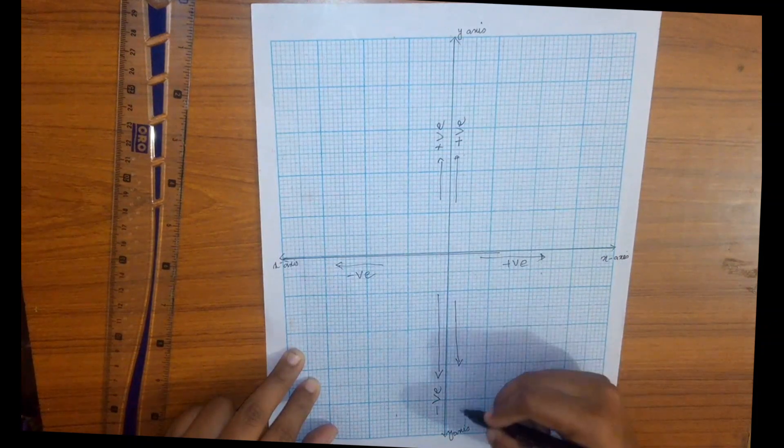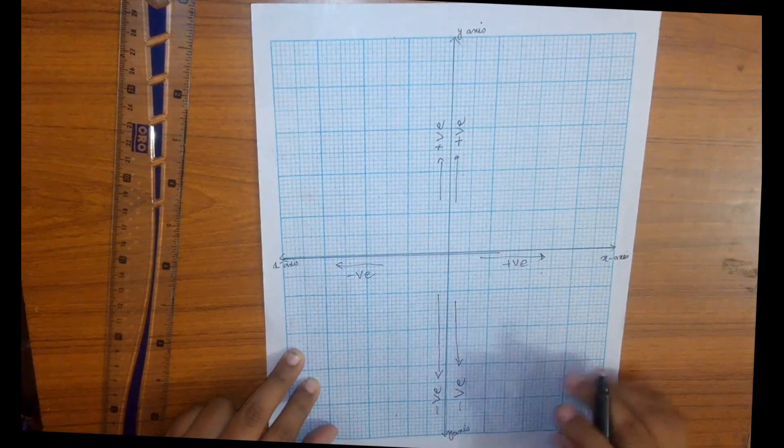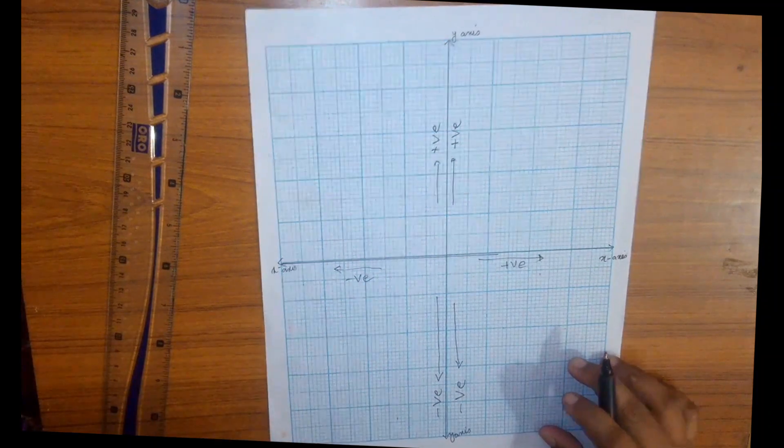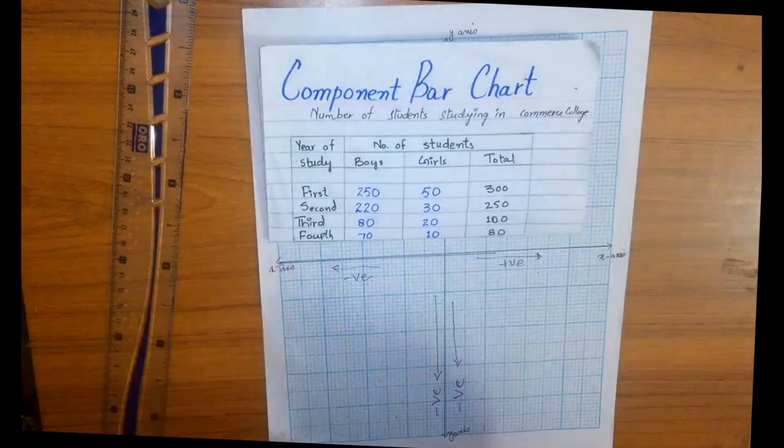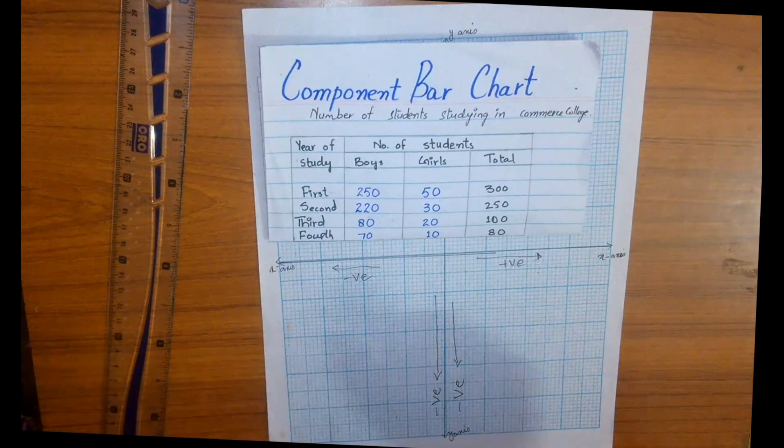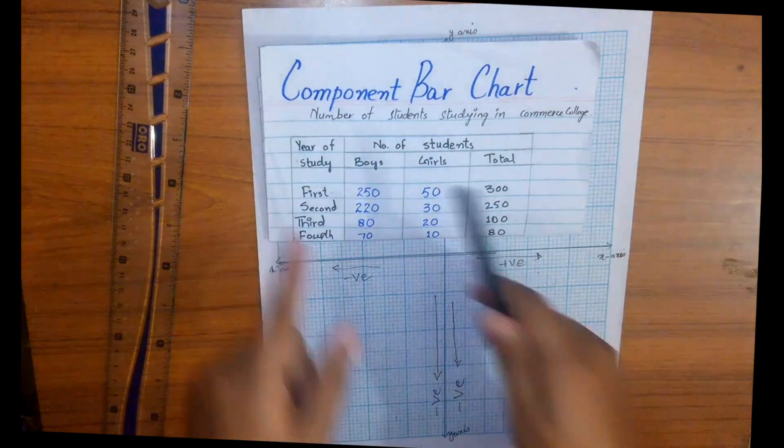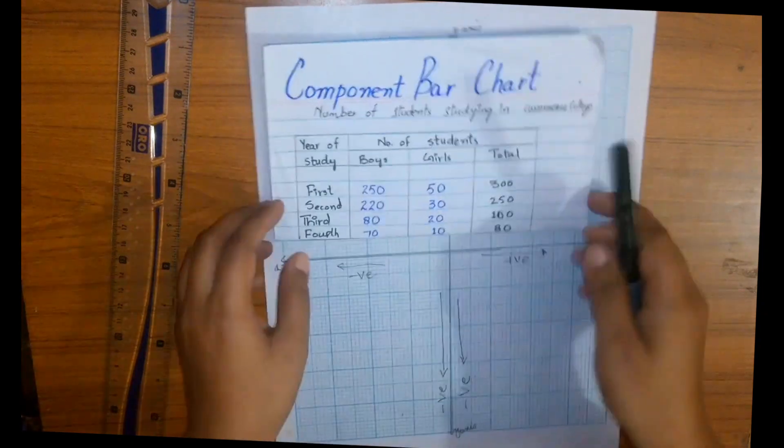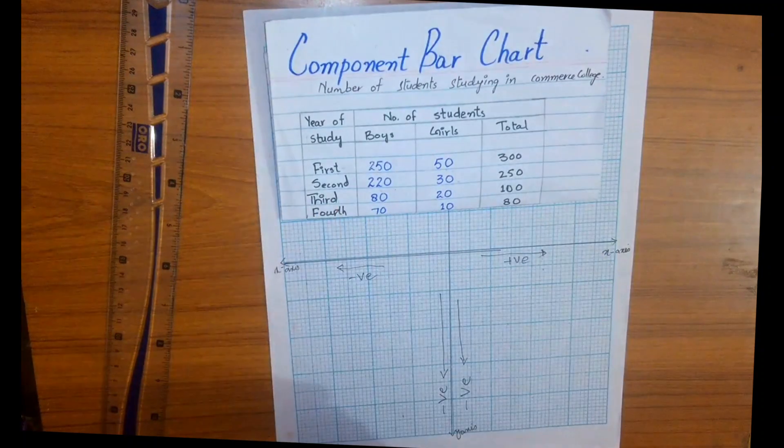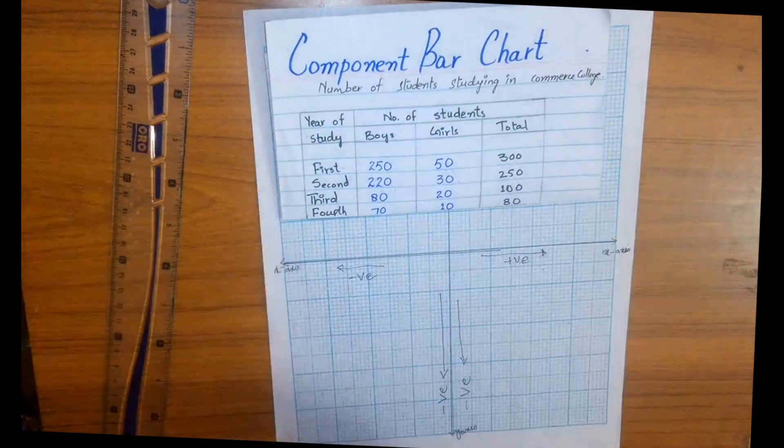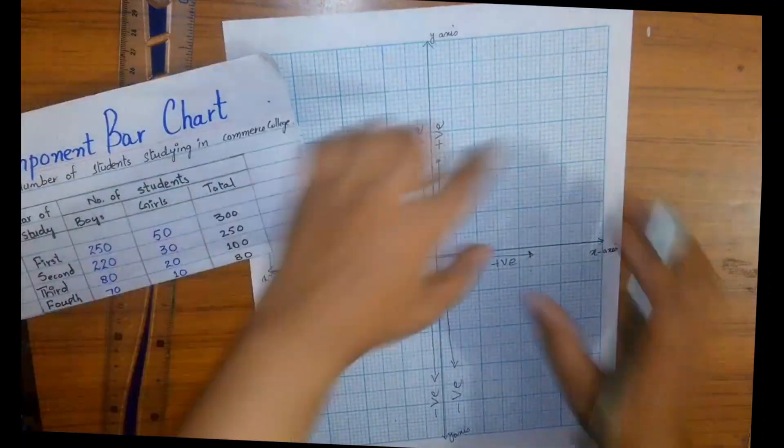Here I am going to use the similar data which I have used in my previous video for component bar charts. In our data we have all positive values, so we will simply enlarge our first quadrant in which there are all positive values.